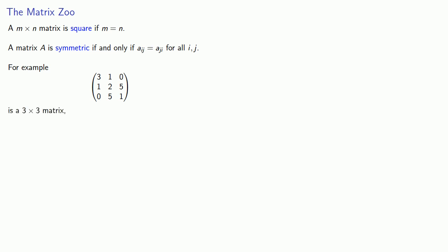We have a few more descriptive terms for matrices. A M by N matrix is square if M is equal to N. And that just means we have the same number of rows as columns. For example, this matrix has 3 rows and 3 columns, so it's a 3 by 3 matrix, and it's square.